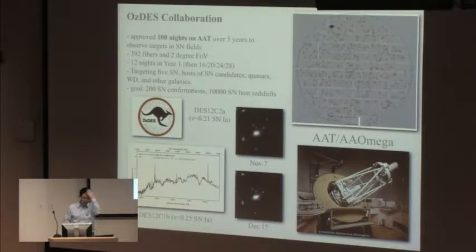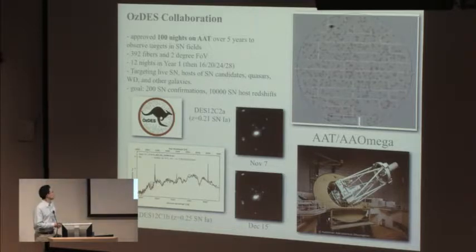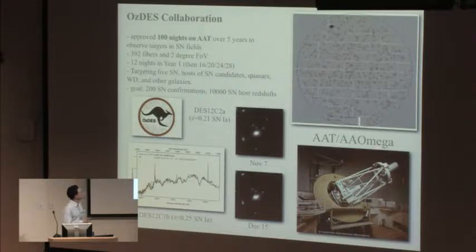The instrument we're using to get spectroscopic redshifts of the galaxies is the AAT telescope and the AAOmega spectrograph. This is a perfect match for DES because it has a field of view almost identical to the DES field of view. We can put 392 fibers at a time to get spectra of 392 galaxies in one shot.